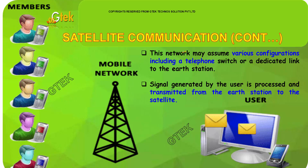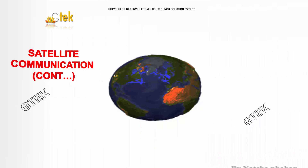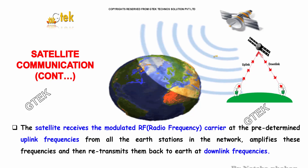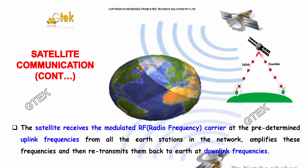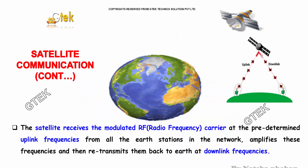Satellite communication. This network may assume various configurations including a telephone switch or a dedicated link to the S-station. Signal generated by the user is processed and transmitted from the S-station to the satellite. The satellite receives the modulated RF radio frequency carrier at the predetermined uplink frequencies from all the S-stations in the network, amplifies these frequencies, and then retransmits them back at downlink frequencies.